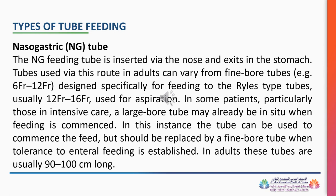Nasogastric tube: The NG feeding tube is inserted via the nose and exits in the stomach. Tubes used via this route in adults can vary from fine bore tubes, for example French 6 to French 12, designed specifically for feeding, to the Ryle's type tubes, usually French 12 to French 16, used for aspiration. In some patients, particularly those in intensive care, a large bore tube may be in situ when feeding is commenced. The tube can be used to commence the feed but should be replaced by a fine bore tube when tolerance to enteral feeding is established. In adults, these tubes are usually 90 to 100 cm long.